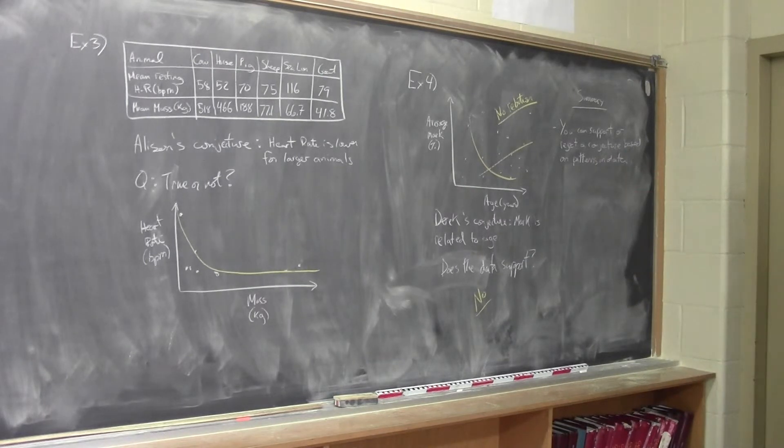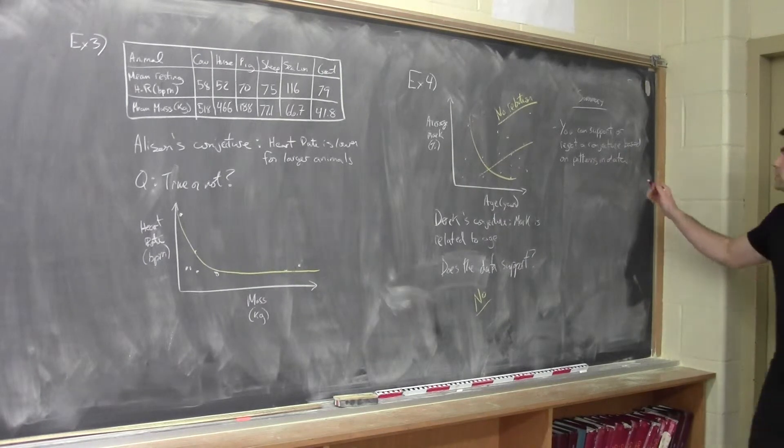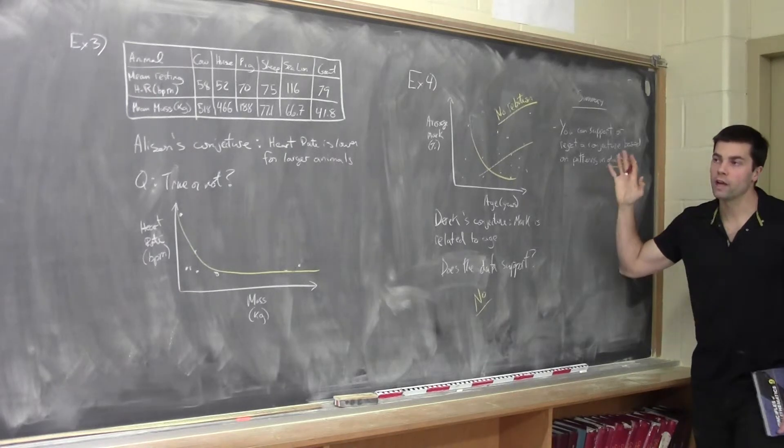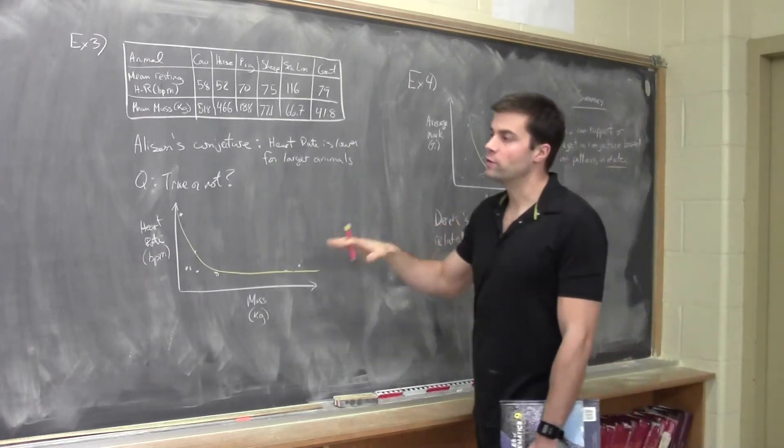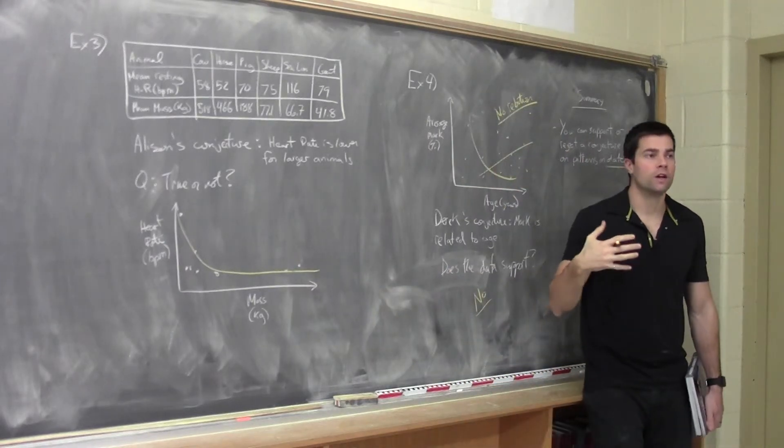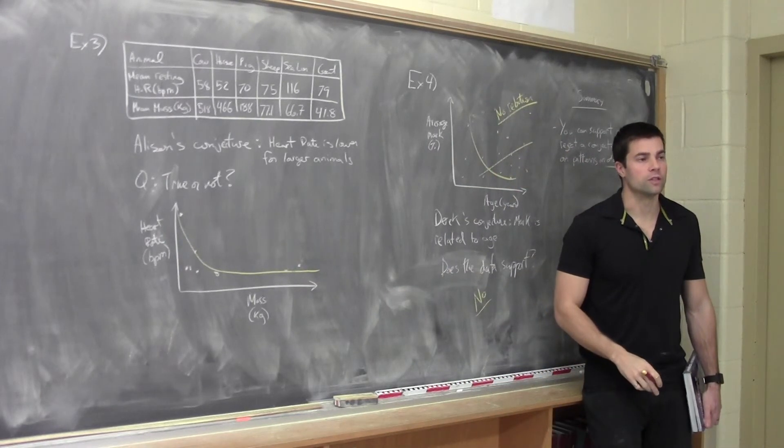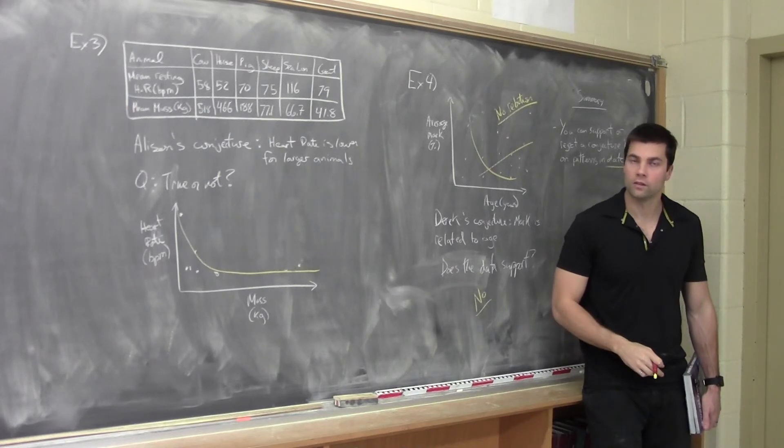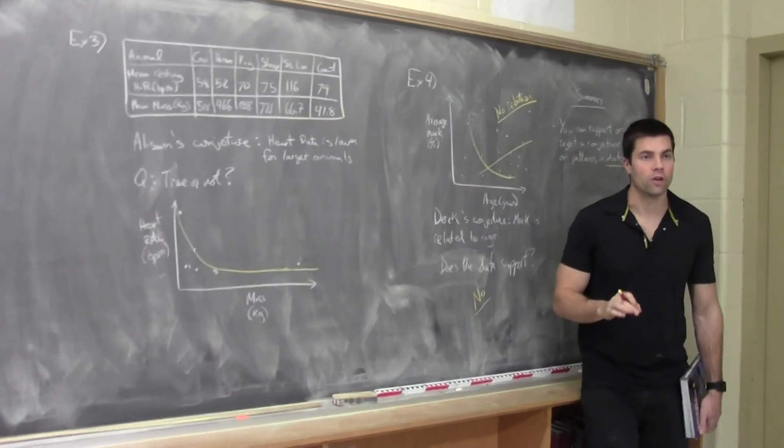So in summary, you can support or reject conjecture based on patterns and data. So very, again, very similar to yesterday, we saw a couple of different things, a couple of different pattern trends, but for the most part, a little bit of a review on yesterday's lesson, or last lesson. All right, any questions? Okay, that's it.